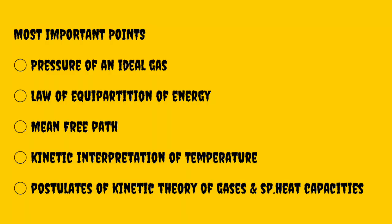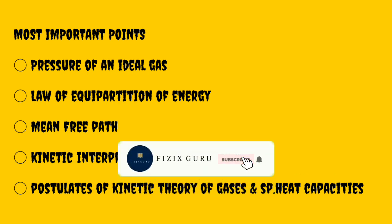To summarize the important topics in this chapter: the pressure of an ideal gas and its derivation; the law of equipartition of energy; kinetic interpretation of temperature; and specific heat capacity for monoatomic, diatomic, and polyatomic molecules. These are the key short-answer topics. Please subscribe to this channel and click the bell icon for notifications.